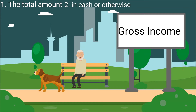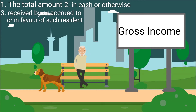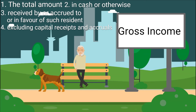Cash and any benefits that have been received or that have accrued must be included in gross income. An example of a benefit would be fringe benefits received by an employee of a company. Thirdly, it must be received by, or accrued to, or in favor of, such resident. This relates to the timing of the amount and in which tax year an amount must be included in gross income. Fourthly, it excludes capital receipts and accruals. For example, capital receipts are subject to the capital gains tax rules and are not subject to income tax rules.